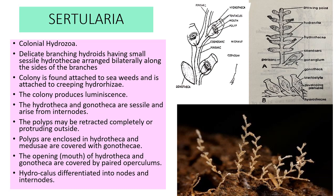The third example is Sertularia, again a colonial hydrozoid. It is a delicate branching hydroid having small sessile hydrotheca arranged bilaterally along the sides of the branches. The colony is found attached to seaweeds via a creeping hydrorhiza and produces luminescence. The hydrotheca and gonotheca are sessile and arise from internodes. The polyps may be retracted completely or protrude outside, enclosed by hydrotheca, while medusa are encircled by gonotheca.